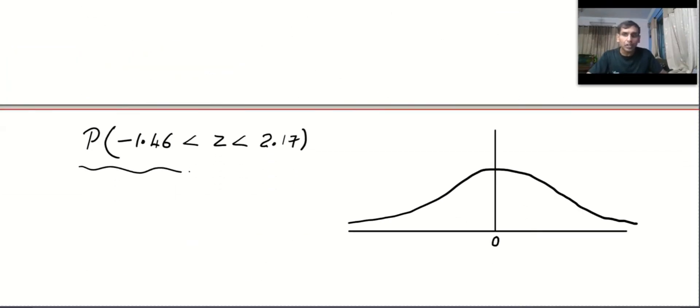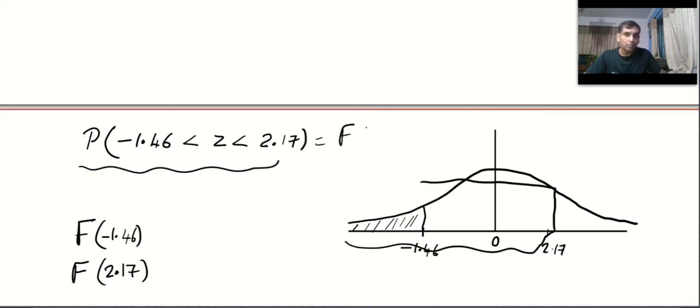Now there is one more possible case. If you are wondering how to do this, it's very simple. Minus 1.46 is over here and 2.17 is over here. Using your calculator, you can find the cumulative value from minus infinity to minus 1.46, and that will be this much area. And using the calculator and the above process, you can find cumulative value from minus infinity to 2.17, and that will be this whole area. So the required area will be bigger minus small.